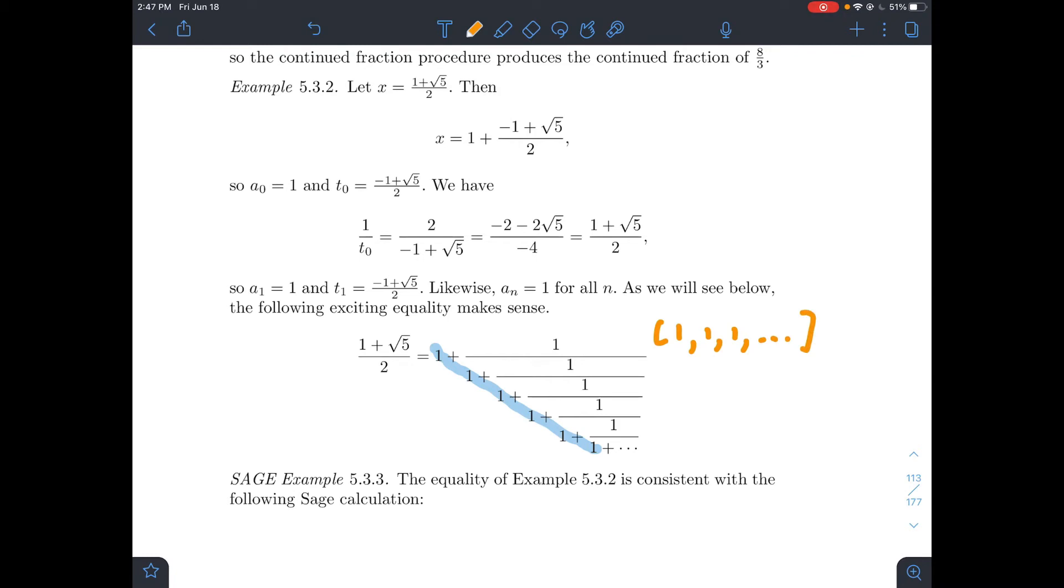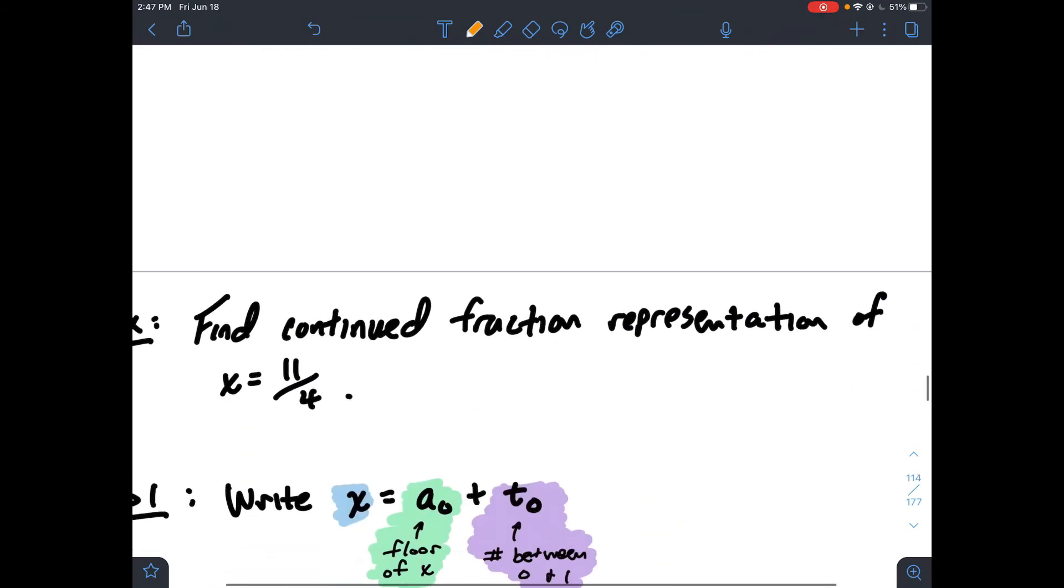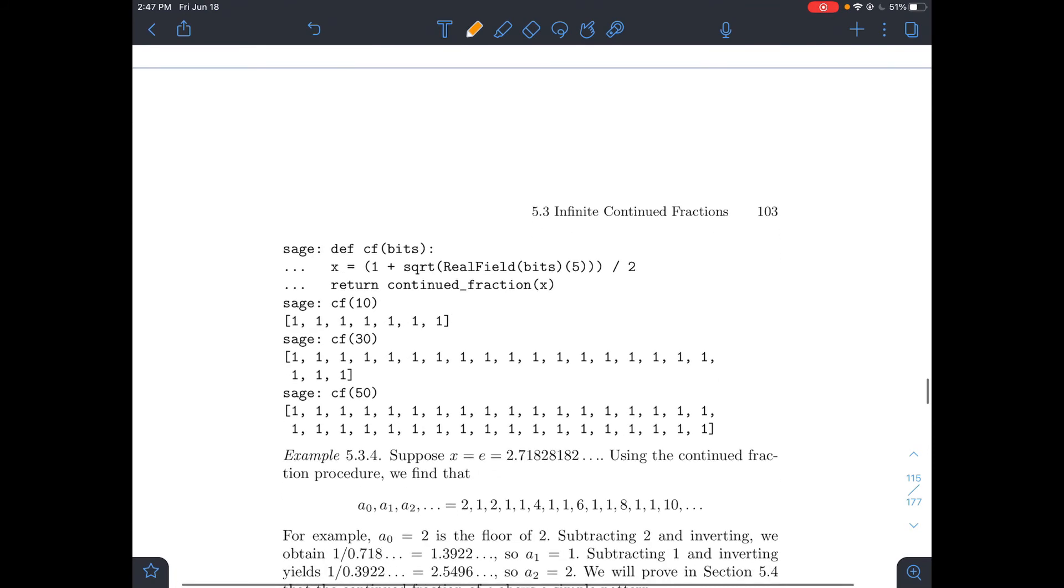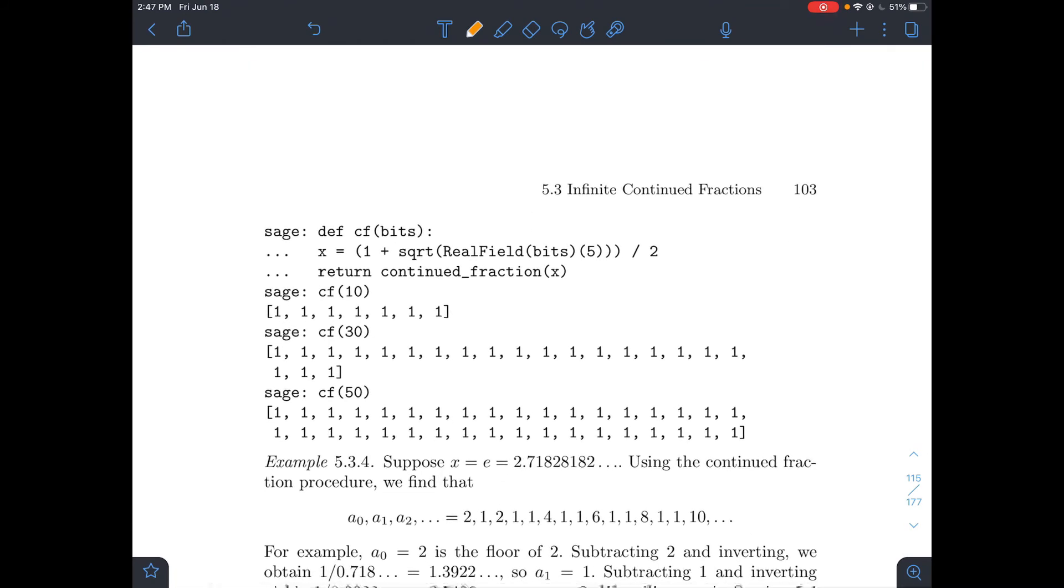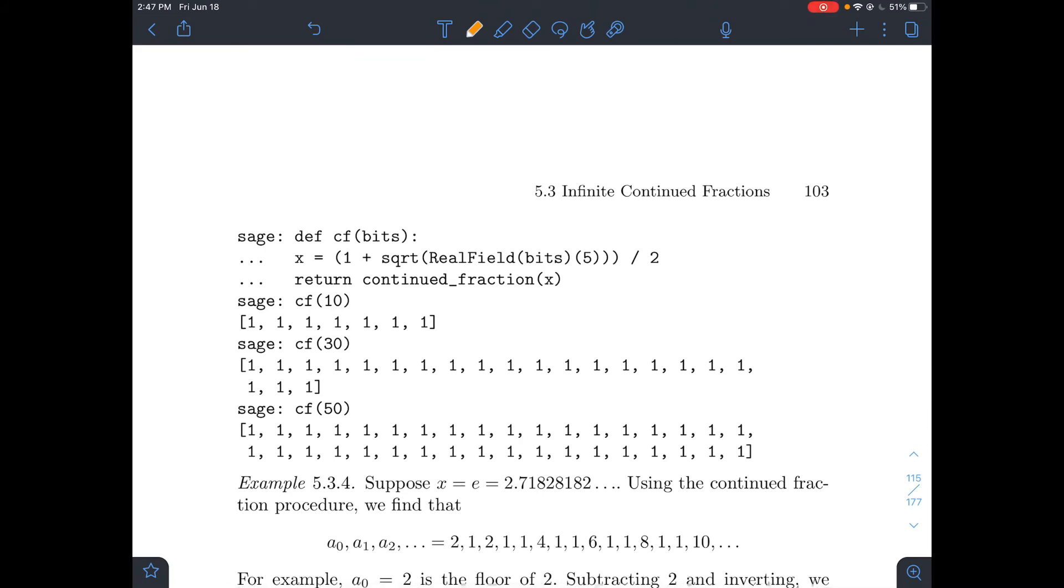The last thing that I want to show you in this video is that you could check this stuff out with Sage. And on page 103, there's just a little bit of code here that will spit out the continued fraction representation. In this example, they're doing it for the golden ratio, but you could do it for anything as well. CF stands for continued fraction.